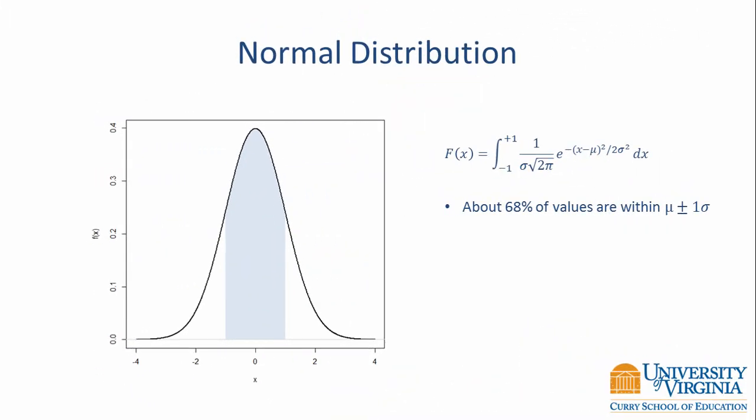An interesting characteristic of the normal distribution is that regardless of whatever the mean and variance are, we know that about 68% of the observations are between plus or minus one standard deviation from the mean. We also know that about 95% of the values are going to be within plus or minus two standard deviations of the mean. And finally, we know that about 99% of the values are within plus or minus three standard deviations of the mean.